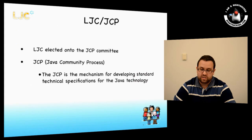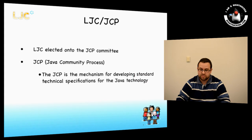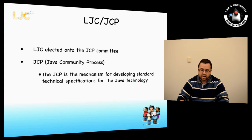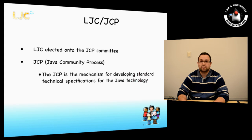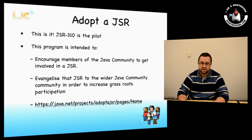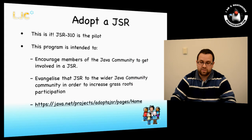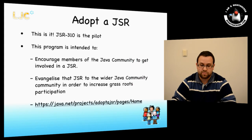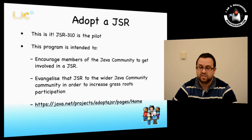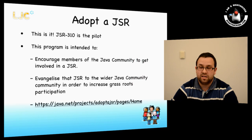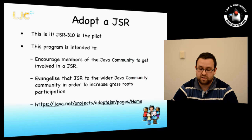I'm part of the JCP group on the LJC that was elected onto the JCP committee around three years ago. The JCP is a mechanism for standardizing technical specifications for Java, and this is one implementation that's gone through the JCP process to reach its final state. We launched an initiative called AdoptedJSR — this was the pilot for it. The program generally encourages members of the Java community to get involved with JSRs, and you can find the project on java.net.